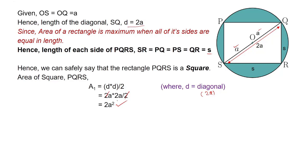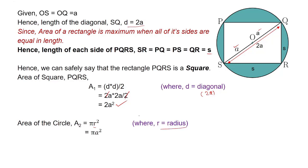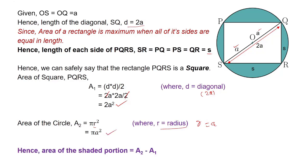Now, the area of the circle is πr², where r is the radius. Substituting r = a, the area of the circle equals πa².